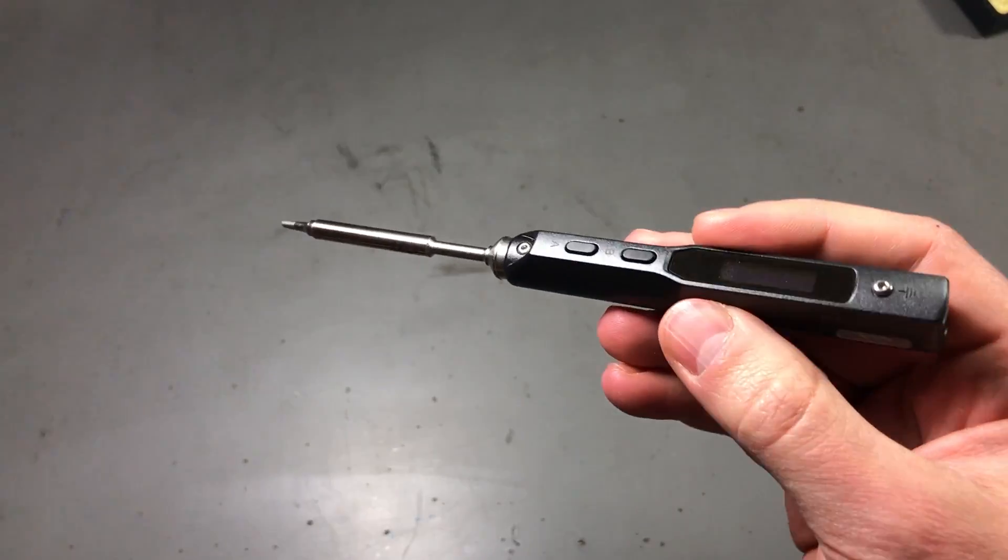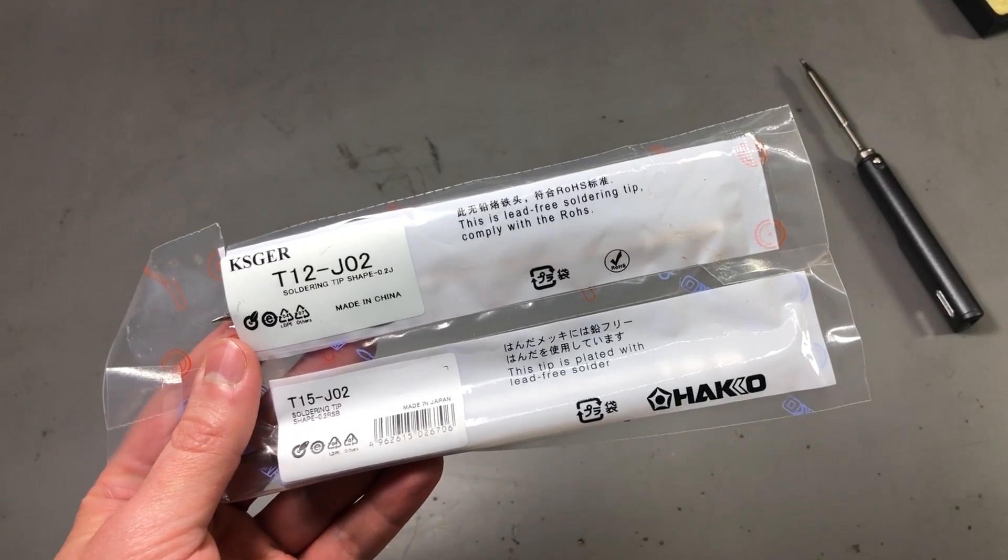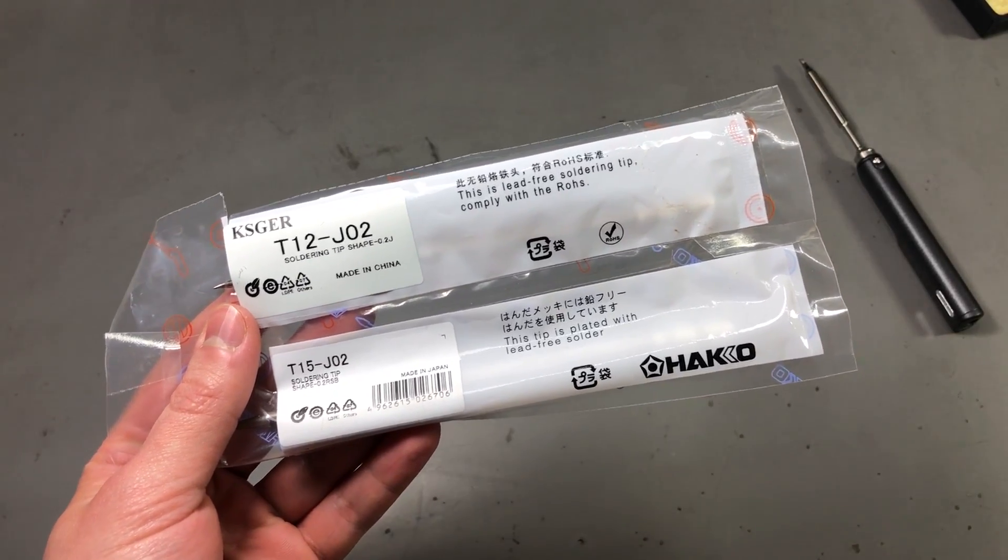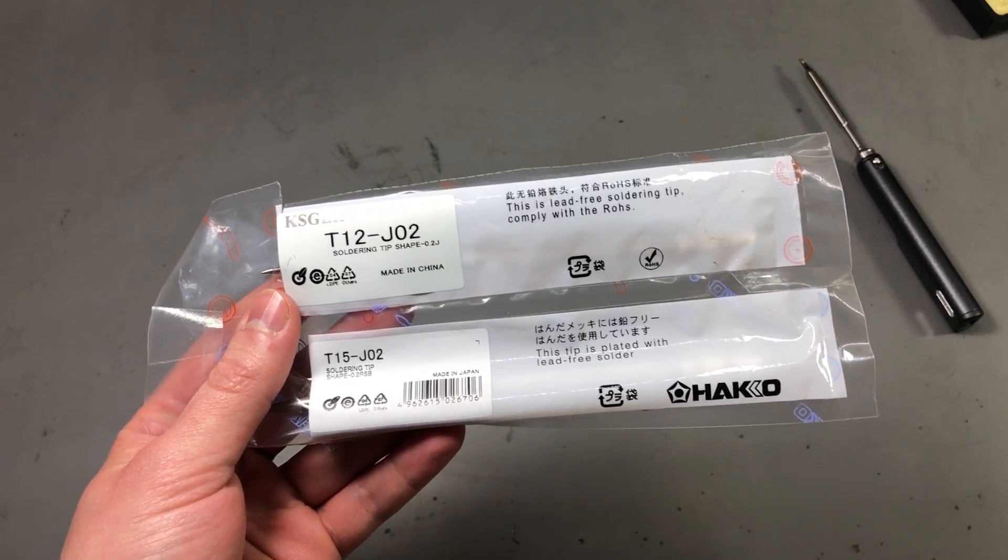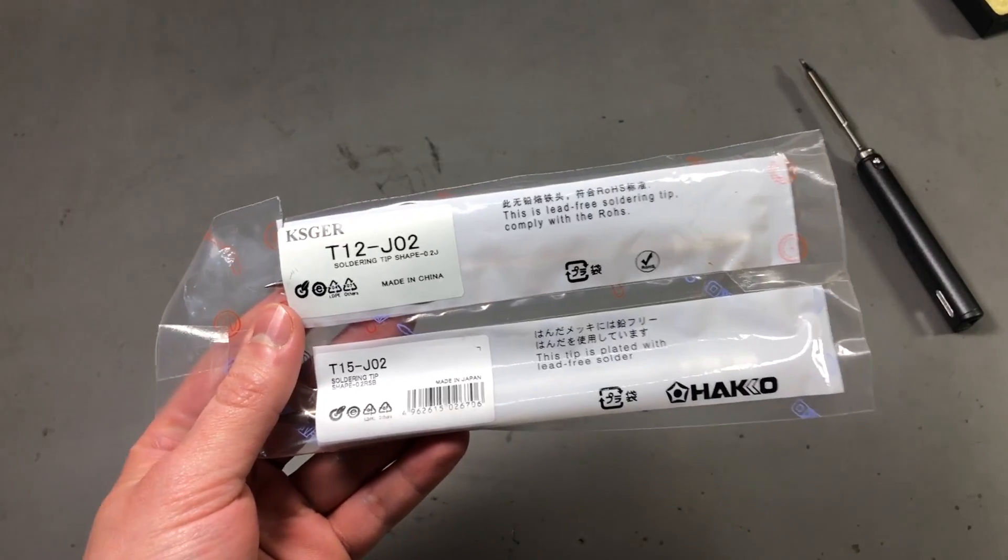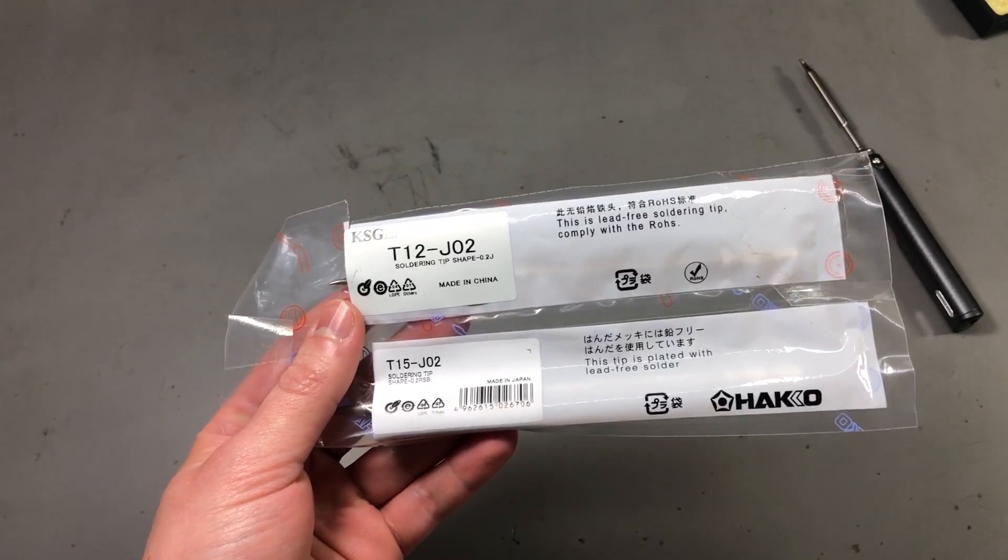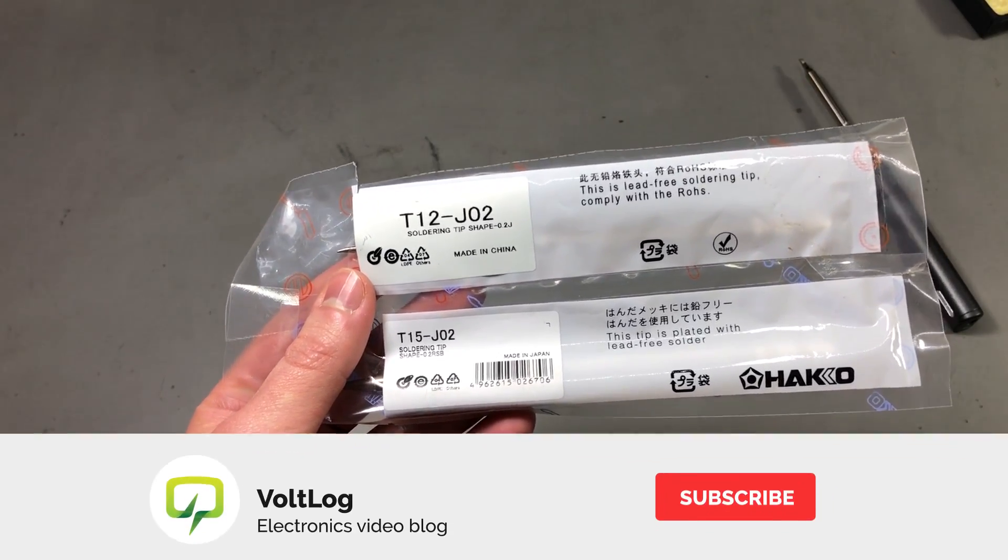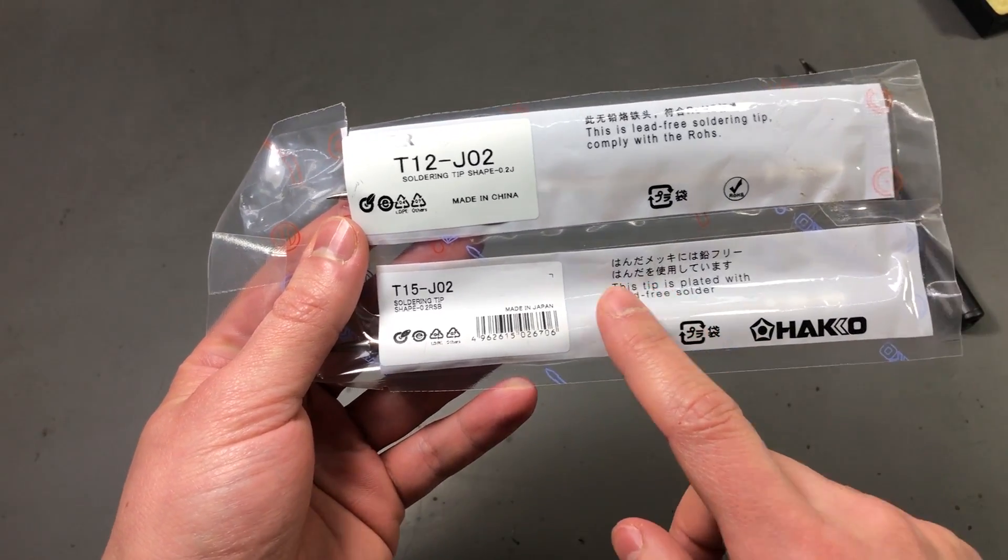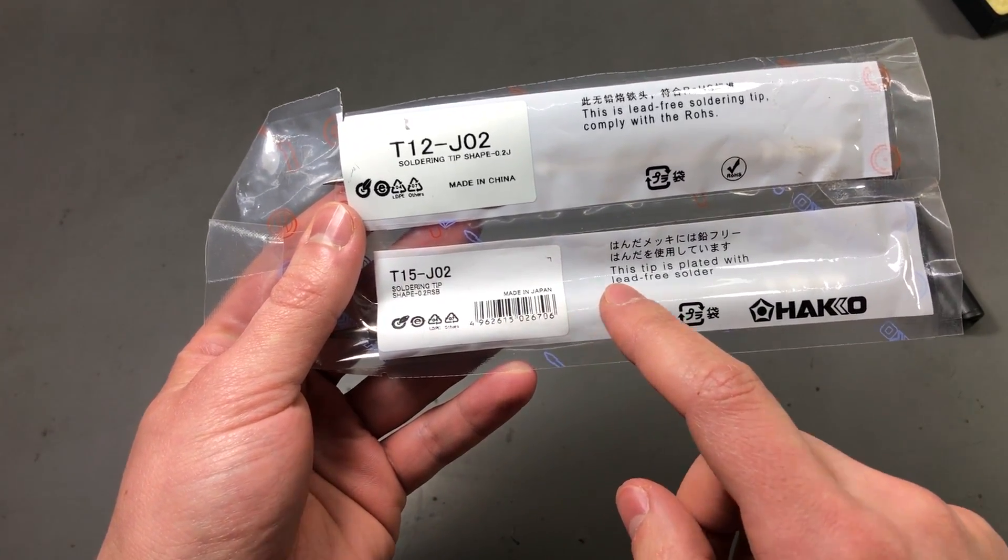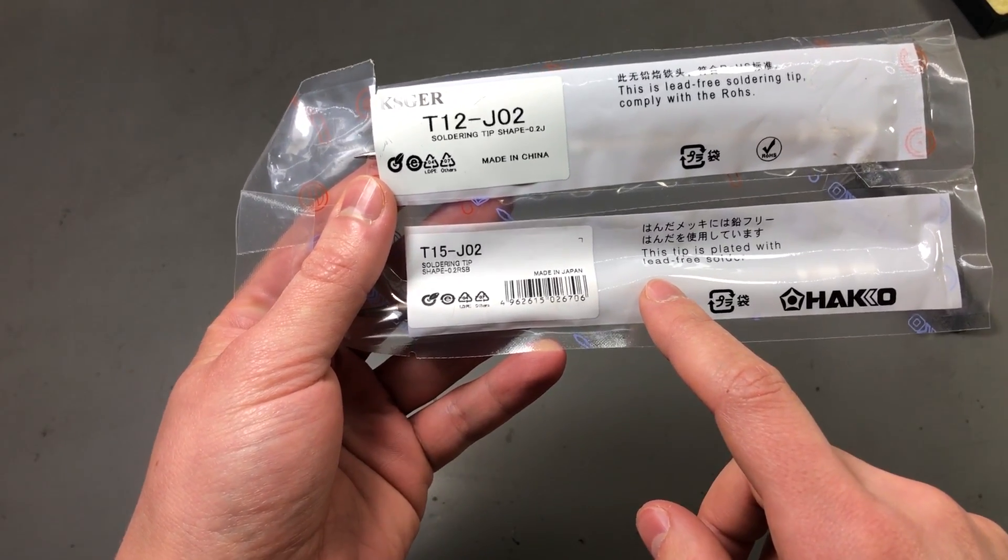Now, as we all know the market is flooded with counterfeit or replacements for Hakko tips, so I've always wondered how does a genuine T12 cartridge tip compare to a replacement or a fake Hakko tip. So today we're going to test a genuine T12 tip versus a replacement one. This is my genuine tip, I got it from a Hakko authorized reseller, the cost was $20, shipping excluded.